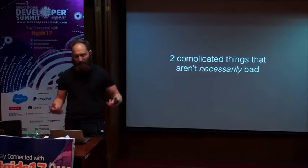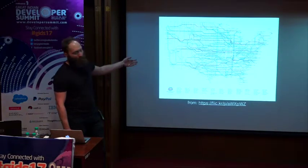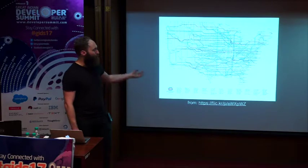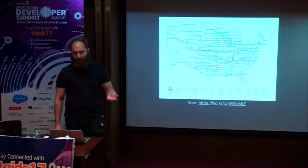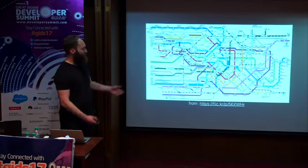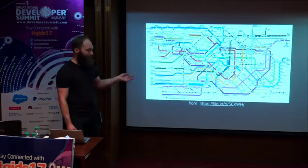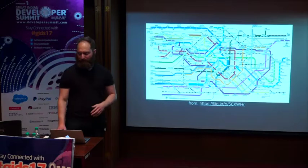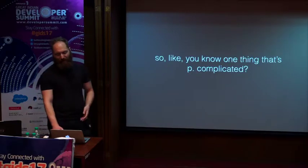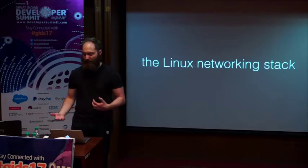Two quick examples of things that are complex but not necessarily bad: a map of the interstate highway system in the US — there are lots of different ways to drive around the country, really complicated but not necessarily bad. Similarly, a map of the Tokyo subway system — a really, really complex system. But just because it's complicated doesn't mean it's necessarily a bad thing.